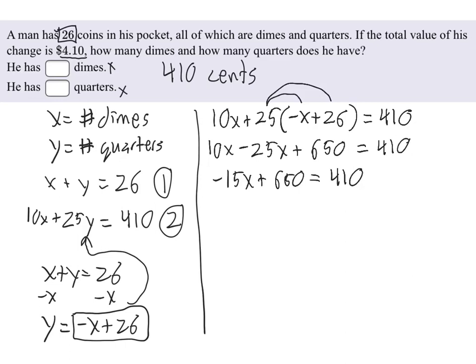And now we need to get the x by itself. So we can move this 650 over by subtracting from each side, leaving us with negative 15x equals negative 240. And then the last step is to divide by negative 15, which tells us that x equals 16.